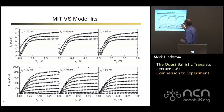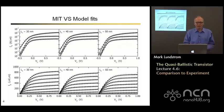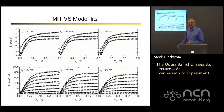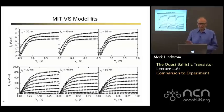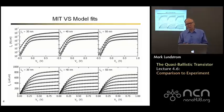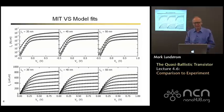This is an example of fitting the MIT virtual source model to measured data across a range of different channel lengths—these are the kinds of fits that can easily be obtained. This is the attraction of the virtual source model: it contains a relatively small number of physical parameters, but a wide range of devices can be very accurately fit. That tells us we're capturing the essential physics in a very sound way without needing a lot of empirical parameters.